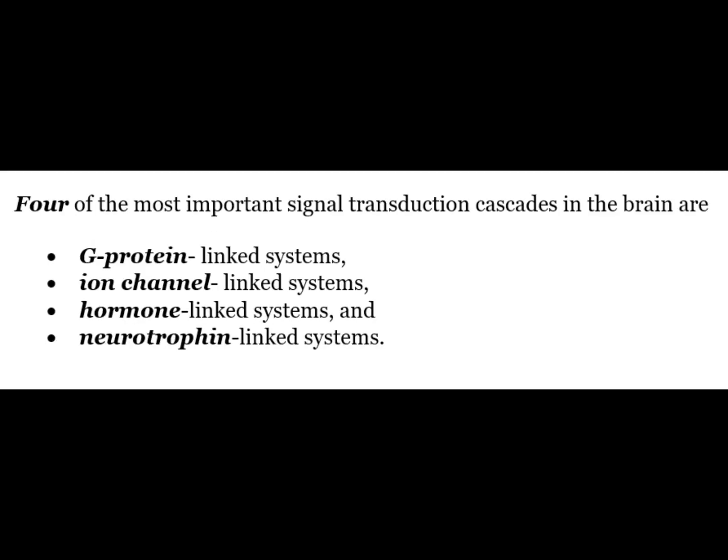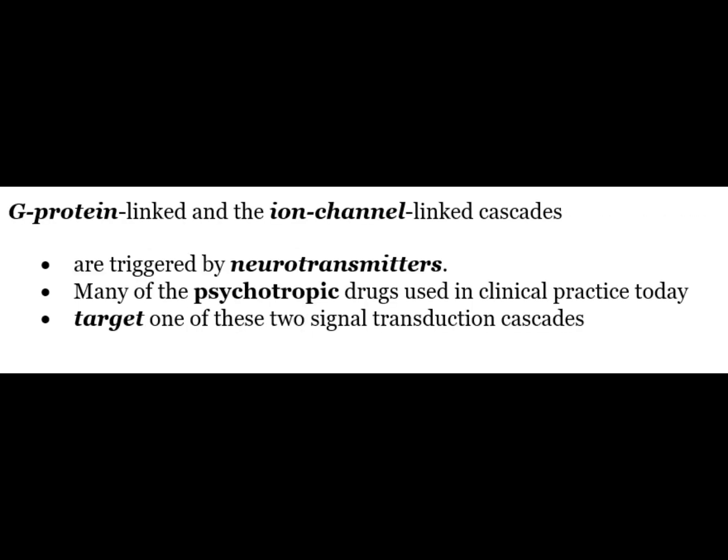Four of the most important signal transduction cascades in the brain are G protein linked systems, ion channel linked systems, hormone linked systems and neurotrophin linked systems. G protein linked and ion channel linked cascades are triggered by neurotransmitters, and many of the psychotropic drugs used in clinical practice today target one of these two signal transduction cascades.